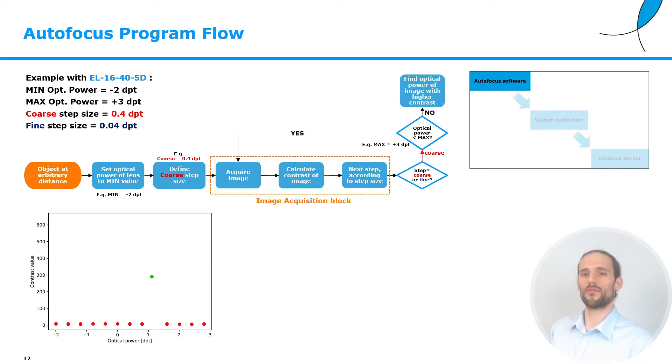When we have reached this optical power, we will find ourselves in a situation like depicted in the bottom line. We will have scanned over the whole optical power range of the lens, and we will acquire all the images. And one of these images will have the highest contrast of them all. At this point, we will basically define a smaller interval around this point, this optical power point. We will define a fine step size, which could be, for example, 0.04 diopters, so 10 times less than the coarse step size. Then we will set the optical power to the minimum of this just defined interval.